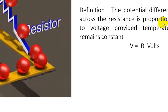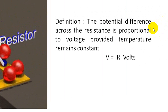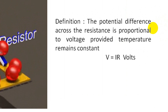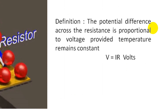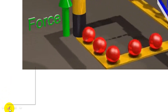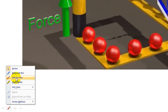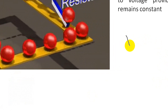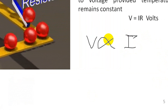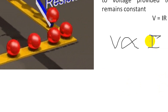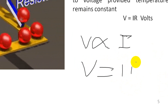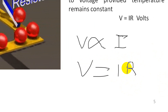Ohm's law states that the potential difference across the resistance is proportional to the voltage provided, when temperature remains constant. V is directly proportional to I. If we remove the proportionality constant R, we can say V is equal to IR. So R is the proportionality constant.